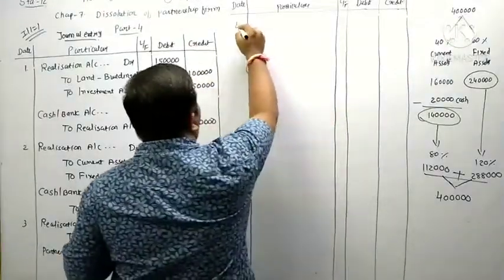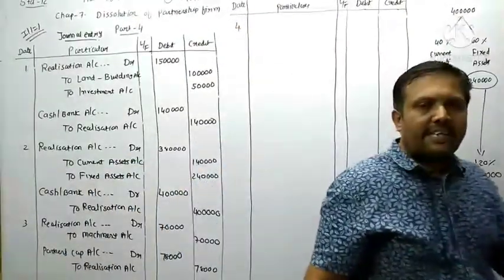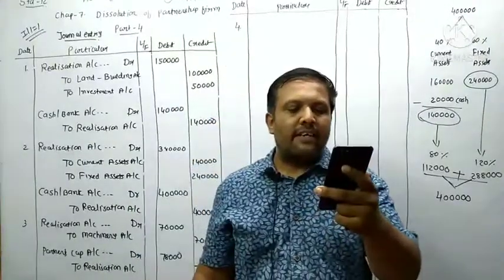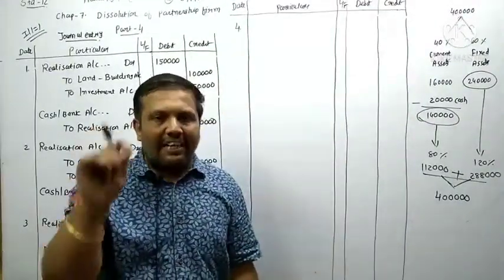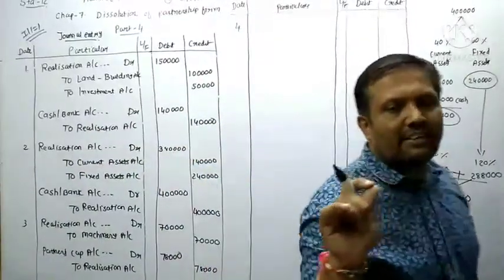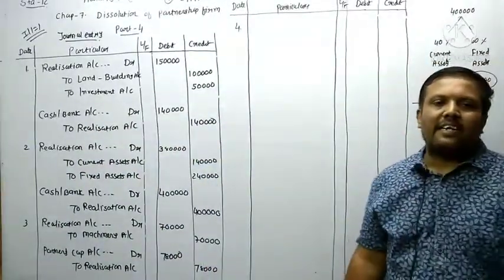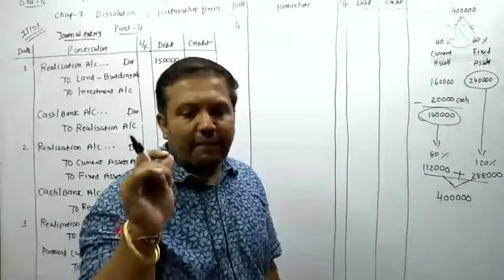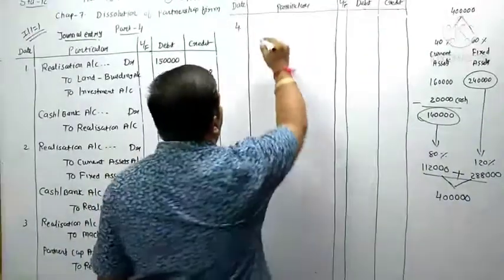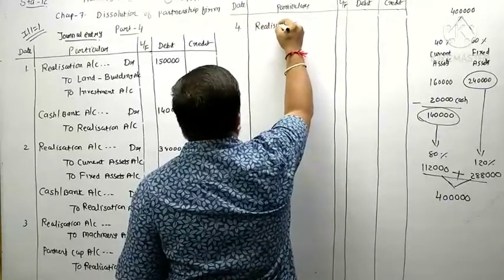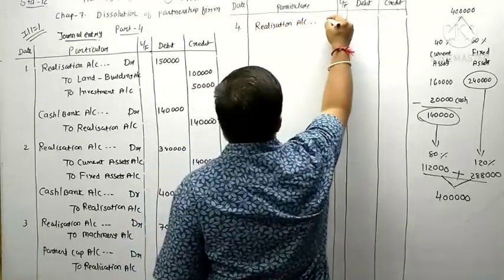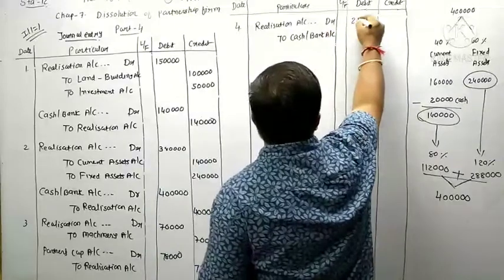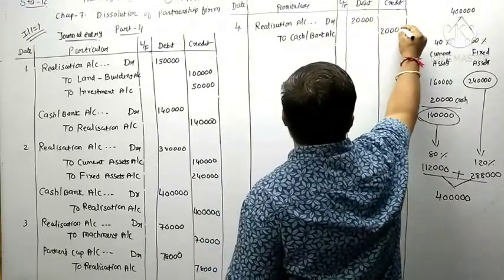Transaction 4 - you can try this yourself for practice. Dissolution expense of the firm is rupees 20,000. As per Entry Number 7 taught earlier, if the firm pays dissolution expenses, the entry is: Realization Account debited to Cash and Bank Account 20,000.